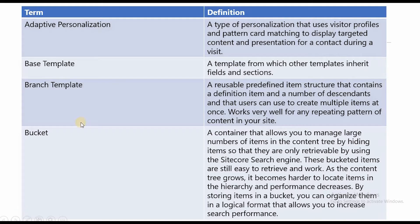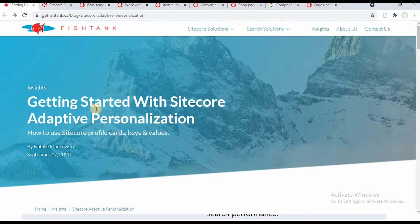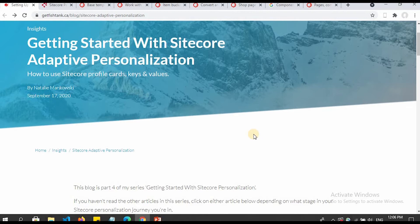The first term is adaptive personalization. What is adaptive personalization? It's a type of personalization that uses visitor profiles and pattern card matching to display targeted content and presentation for the contact during a visit. If you want to read more about adaptive personalization, I recommend this site — I'll put the links in the description box.